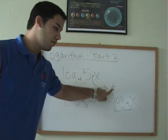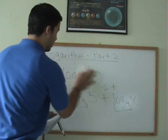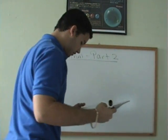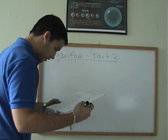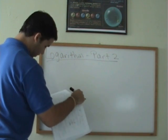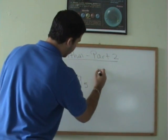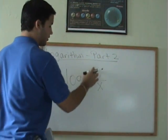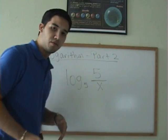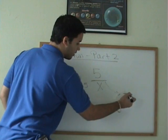When you have the plus, the opposite would be the multiplication symbol. Now, suppose we have a division sign. Suppose we have log base 5 of 5 over x. In this case, we have a division sign, so we're going to use the opposite of division, which in logarithms is the minus sign.